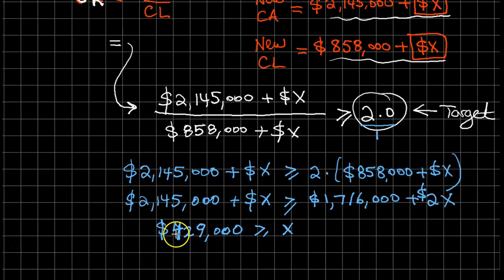That's the maximum loan that the bank, that our company should take from that bank. So long as we borrow an amount less than or equal to $429,000, our current ratio should not fall below its target of 2.0. That would be all about this problem. Thank you.